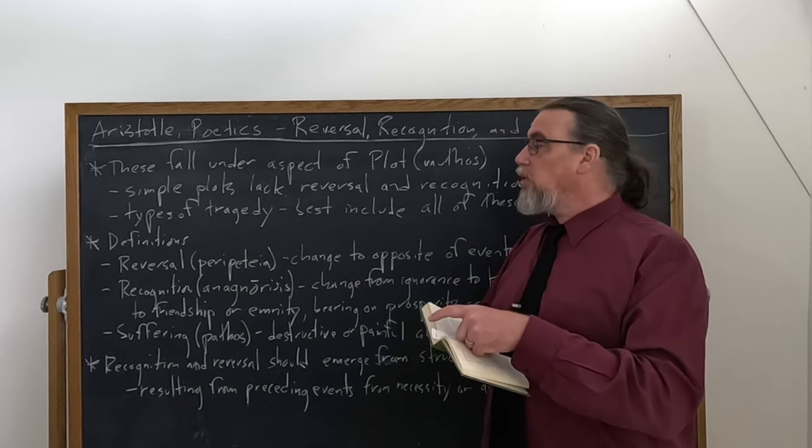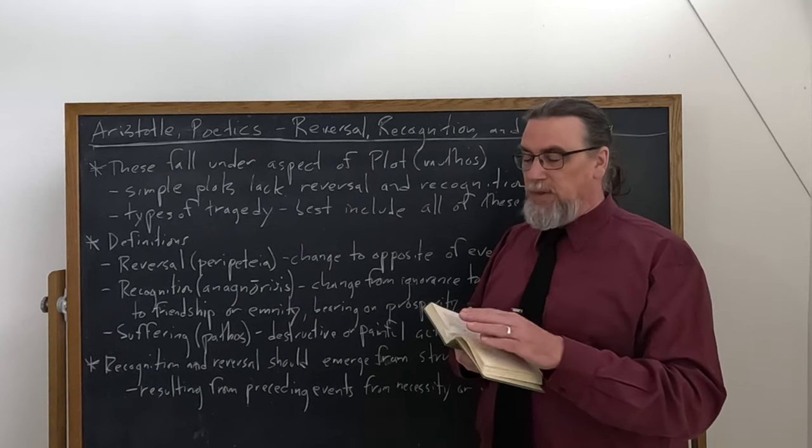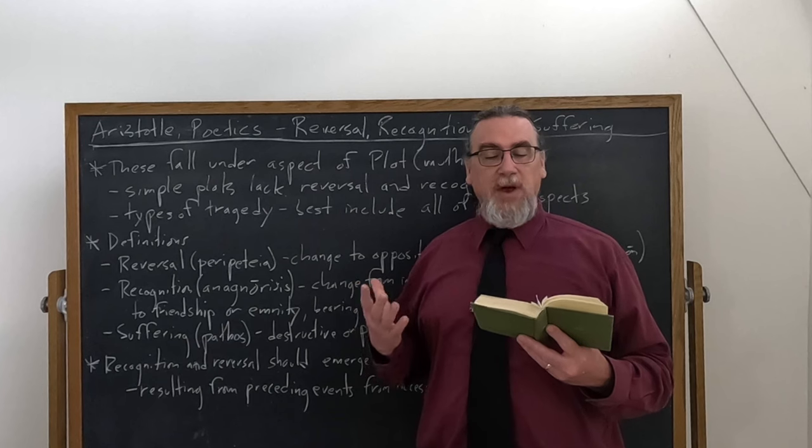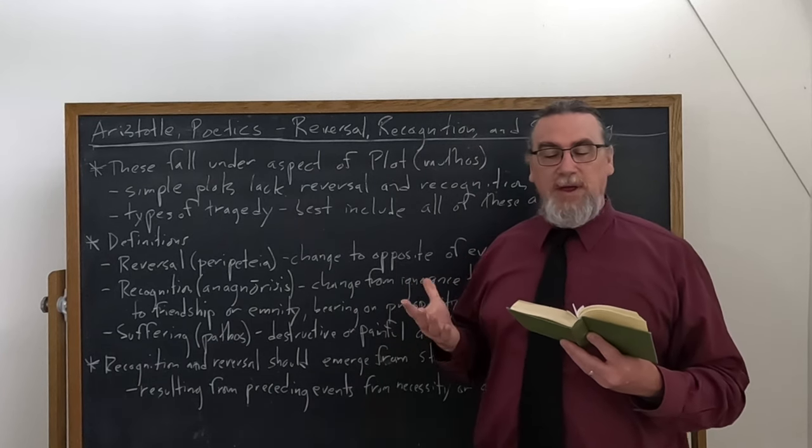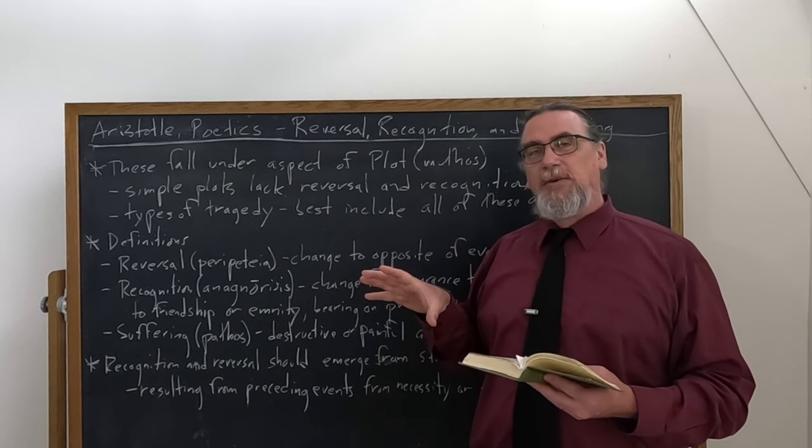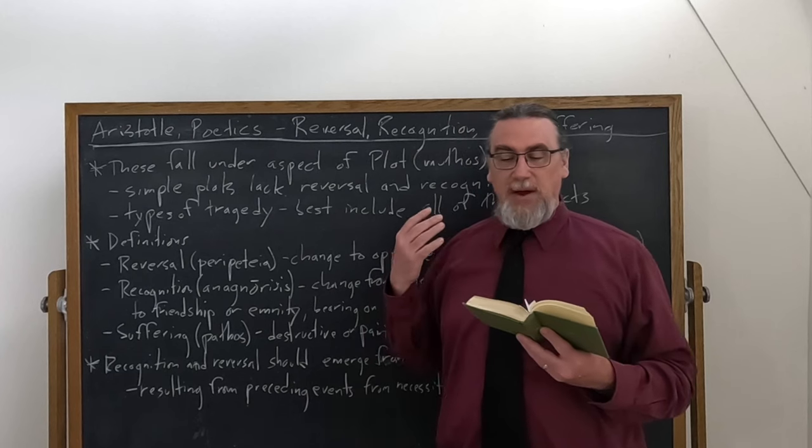So we'll look at what these are in just a moment, but there is something I wanted to bring up from considerably later in the book when he's talking about four types of tragedy. And types here is actually translating eide. So he's serious about this. These are, this is a division.